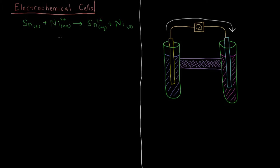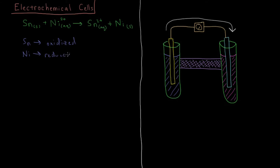This is called an oxidation-reduction reaction, and if it's spontaneous in the direction written — which it is — then the Gibbs energy decreases during the reaction. The tin loses 2 electrons, going from neutral to 2+, so tin is oxidized. Oxidation is a loss of electrons. The nickel goes from 2+, gains 2 electrons to become neutral solid nickel. That gain of electrons is a reduction, so the nickel 2+ is reduced.